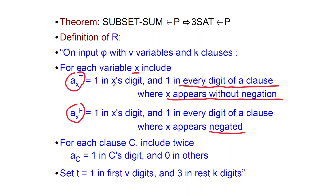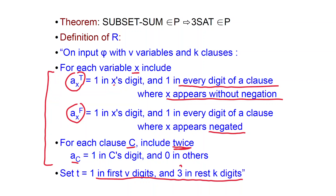These are the numbers built based on the variables. Then, for technical reasons, for each clause c, we also include two copies of the number ac, which has a one in the digit corresponding to c and zero in all others. The target t will have a one in the first v digits and a three in the other k digits.